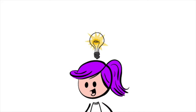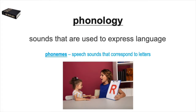Now let's take a look at each of the systems that make up language. Phonology is the sounds that are used to express language. This includes alphabetic sounds — the sounds that each letter of the alphabet makes — which are called phonemes. Prosody and articulation are also components of phonology. These have to do with intonation, pitch, and stressed and unstressed syllables. You'll see these terms again when you get to oral reading fluency.